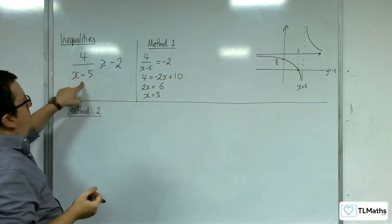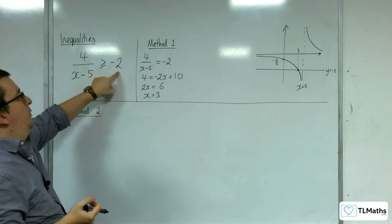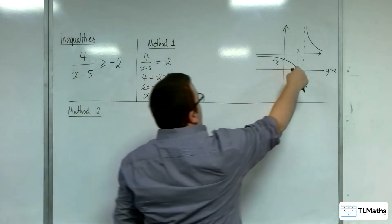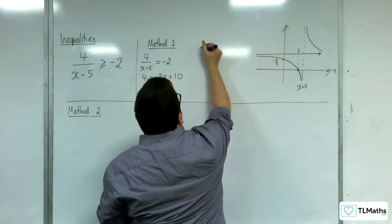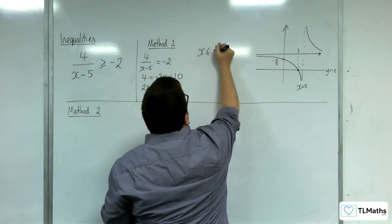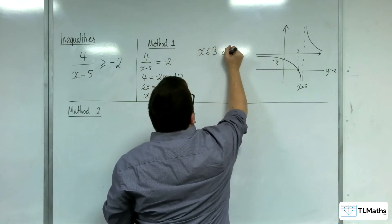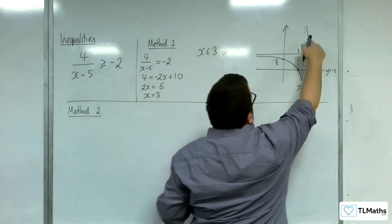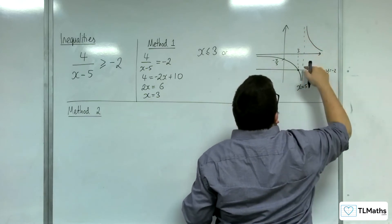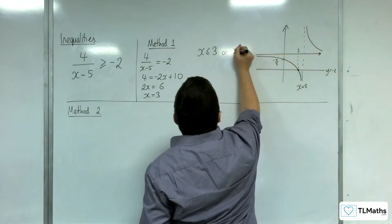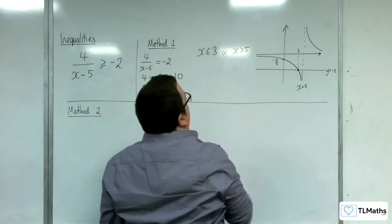So where is the graph above or equal to minus 2? It's above it here. So x is less than or equal to 3. Or it's above it here when x is greater than 5. So notice the inequalities.